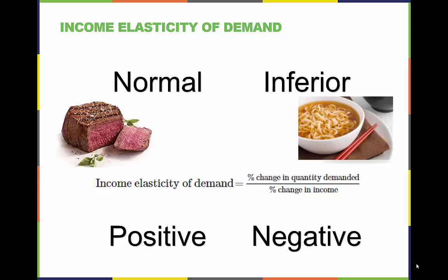Income elasticity of demand tells us how much our demand for a given product or service changes as our income changes. Normally we see the demand for a product or service go up if our income rises and go down if our income drops. The products and services that have income elasticity of demands that are positive numbers are called normal goods and services.